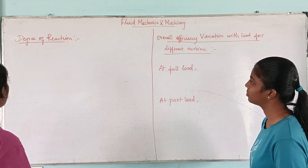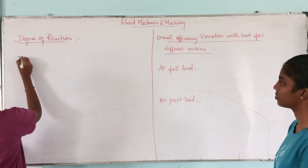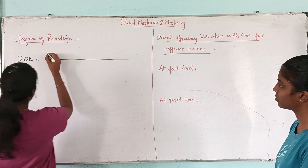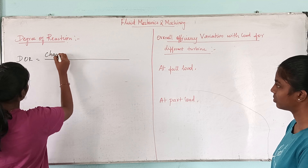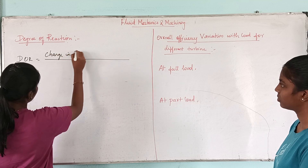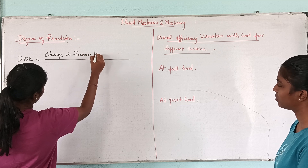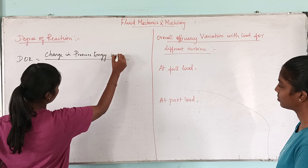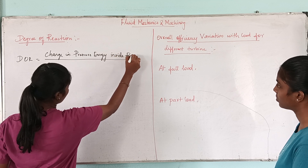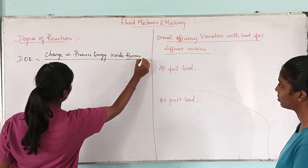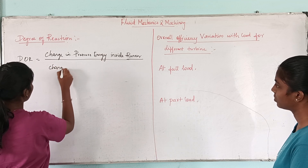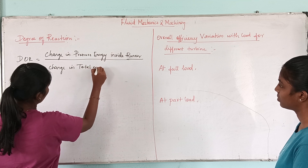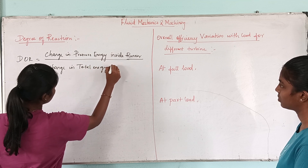First, degree of reaction. Degree of reaction is a ratio of change in pressure energy inside the runner to the change in total energy inside the runner.